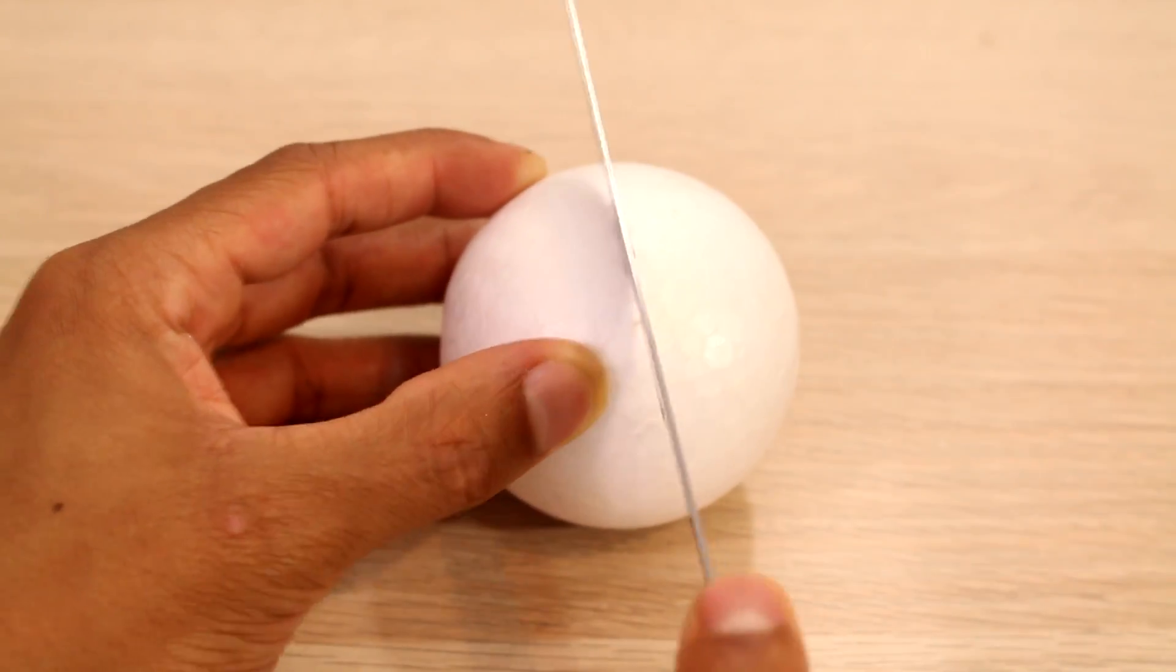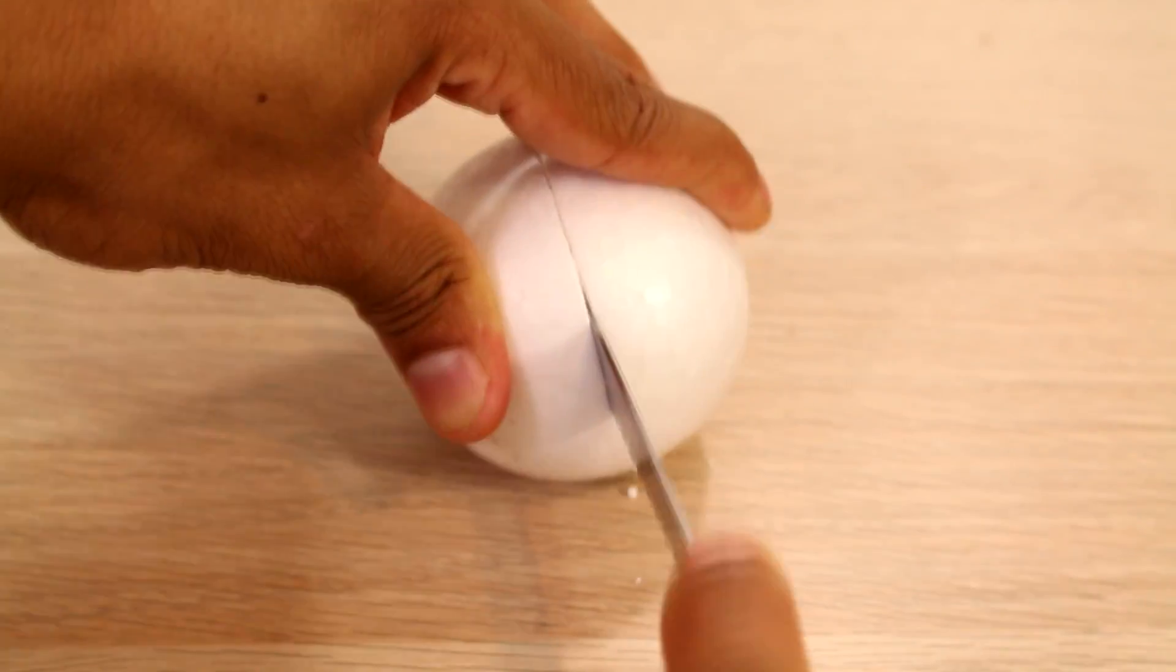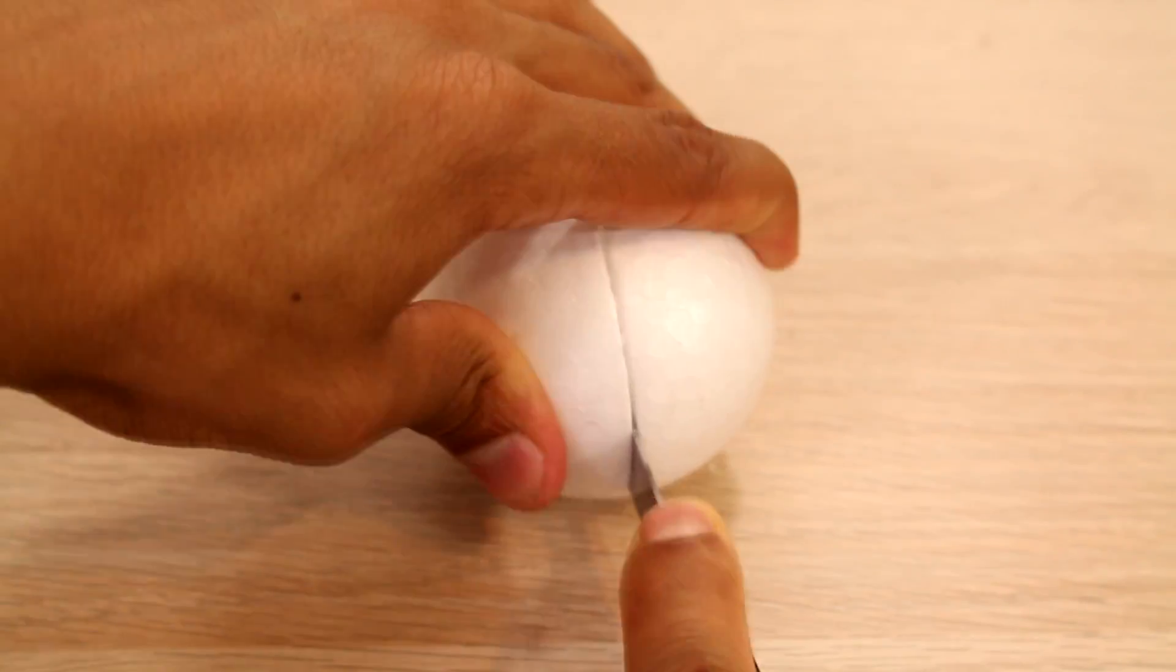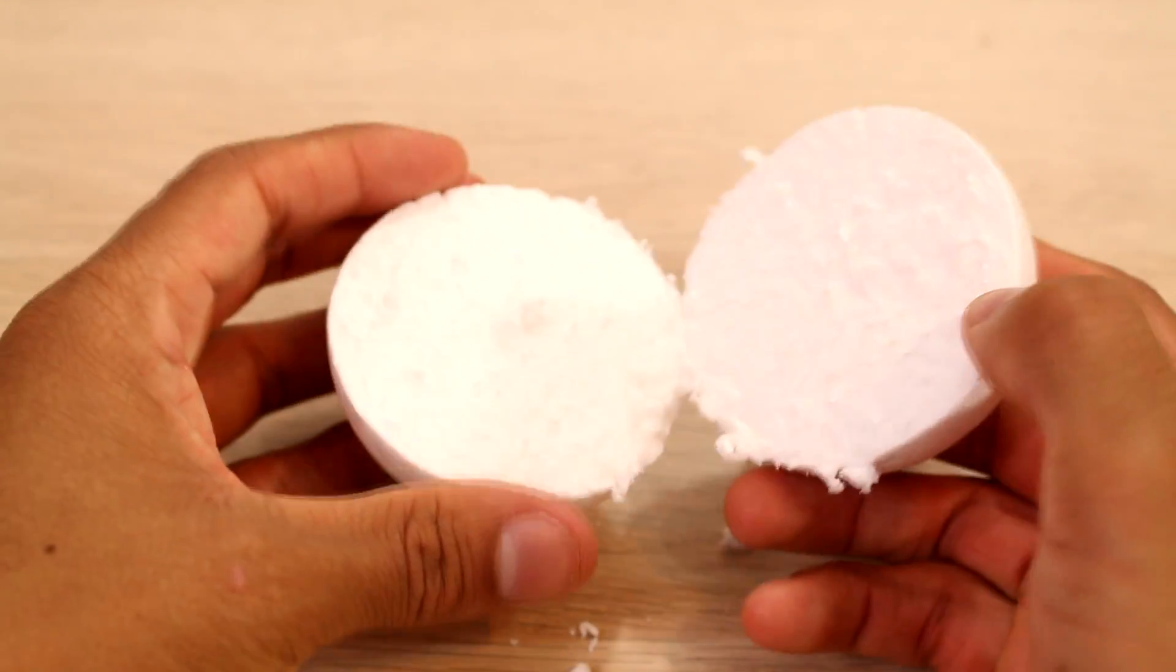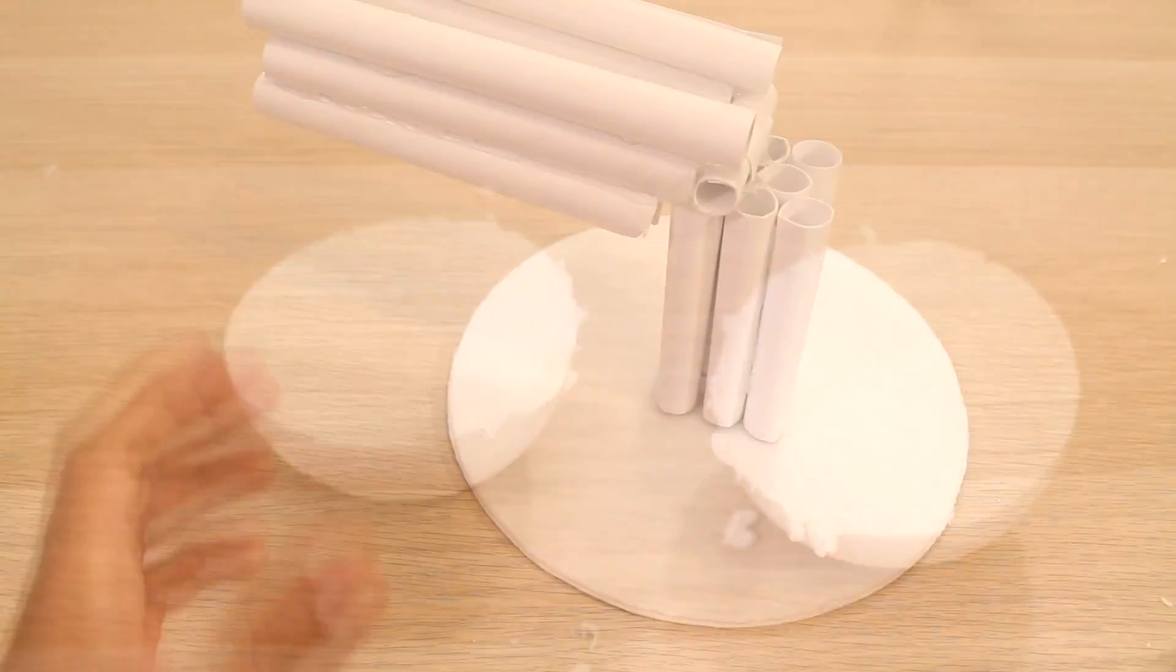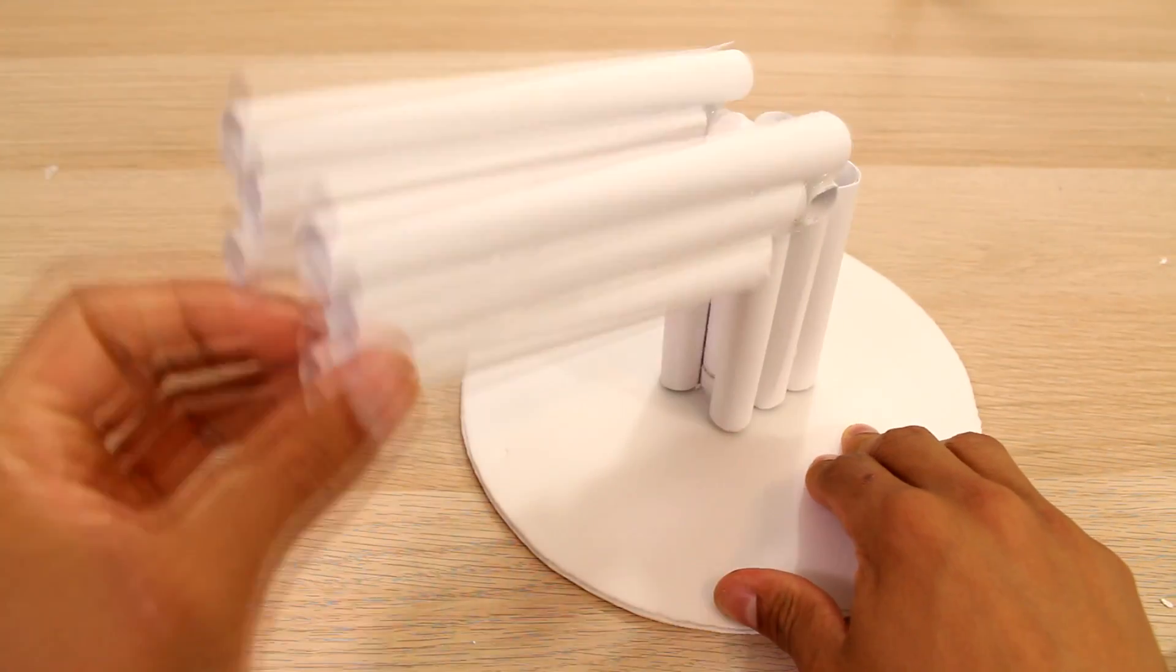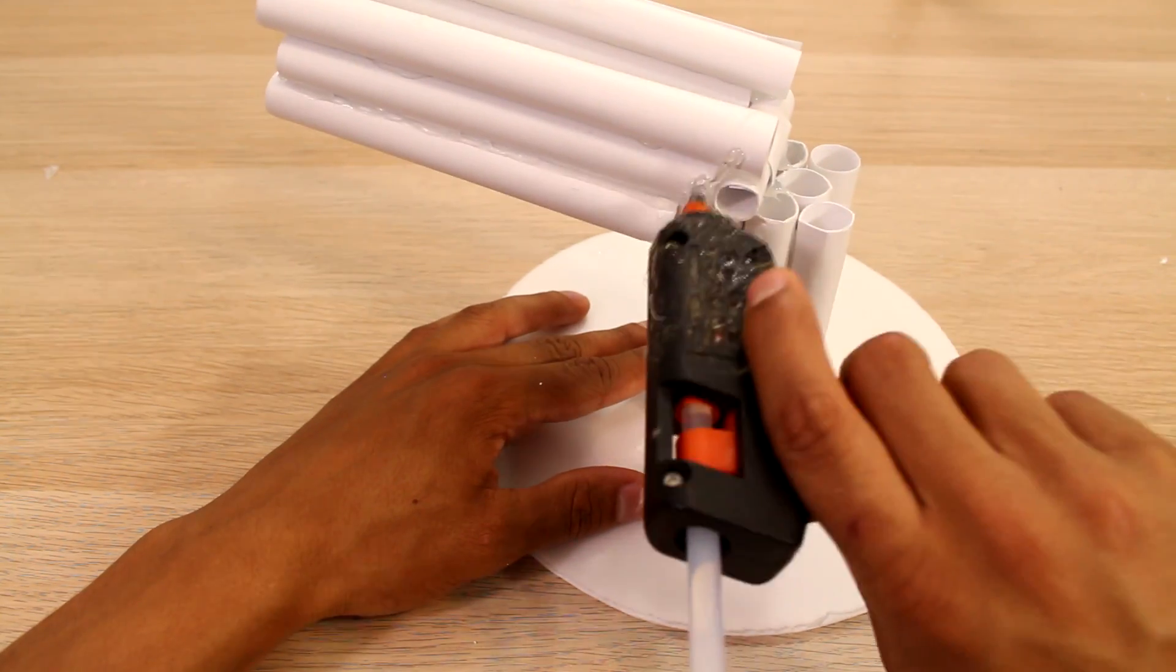So now we want something to cover up our ugly little joint that we just made. So I'm going to cut a foam ball in half with just a normal kitchen knife. And then we can glue each half of the foam ball to each side of this rotating joint that we have right here.